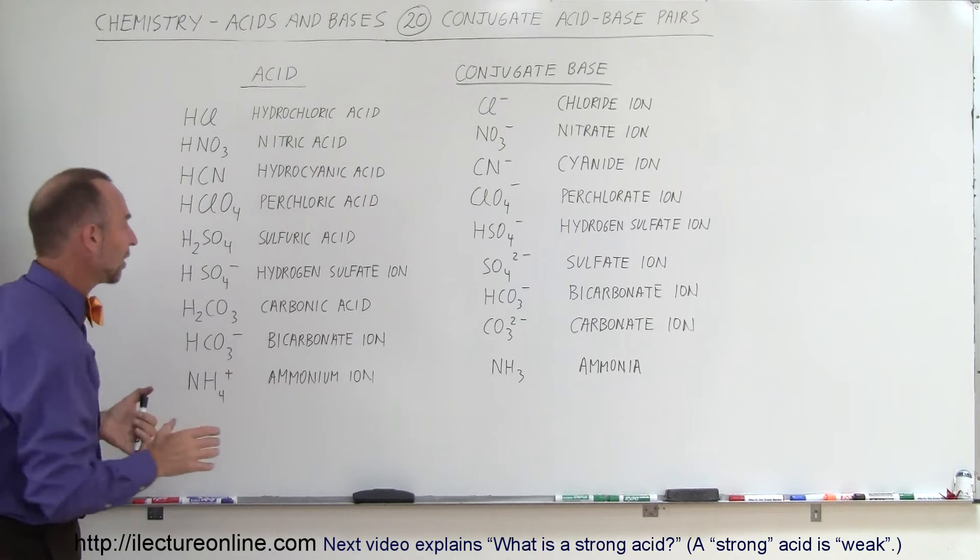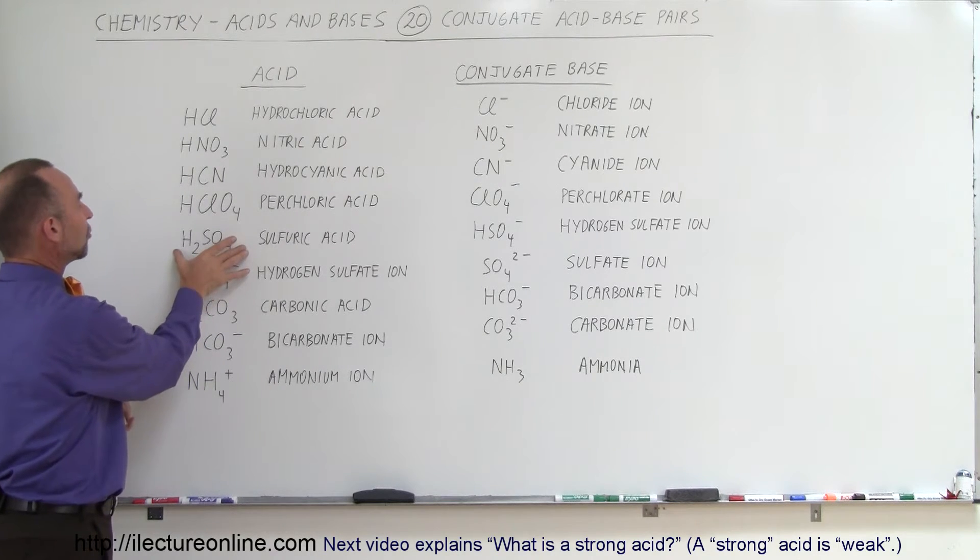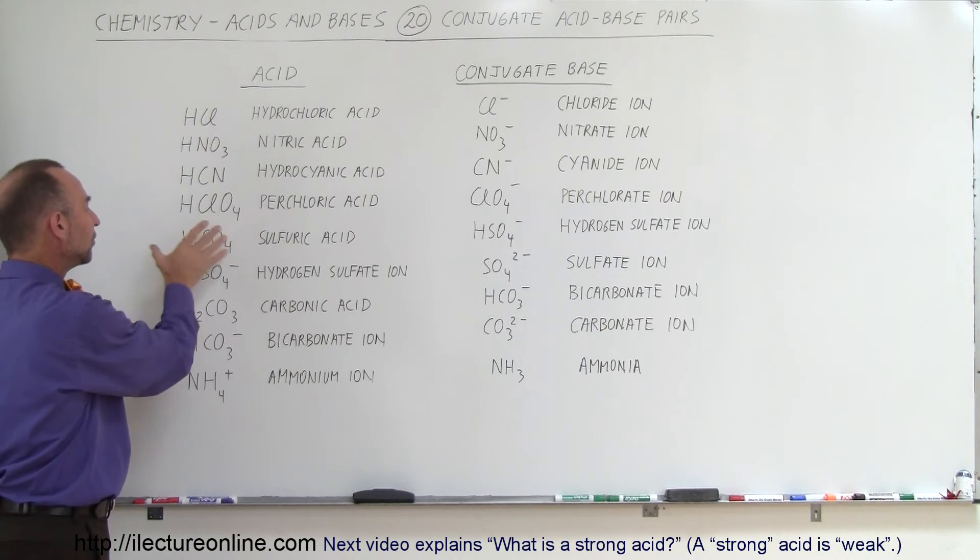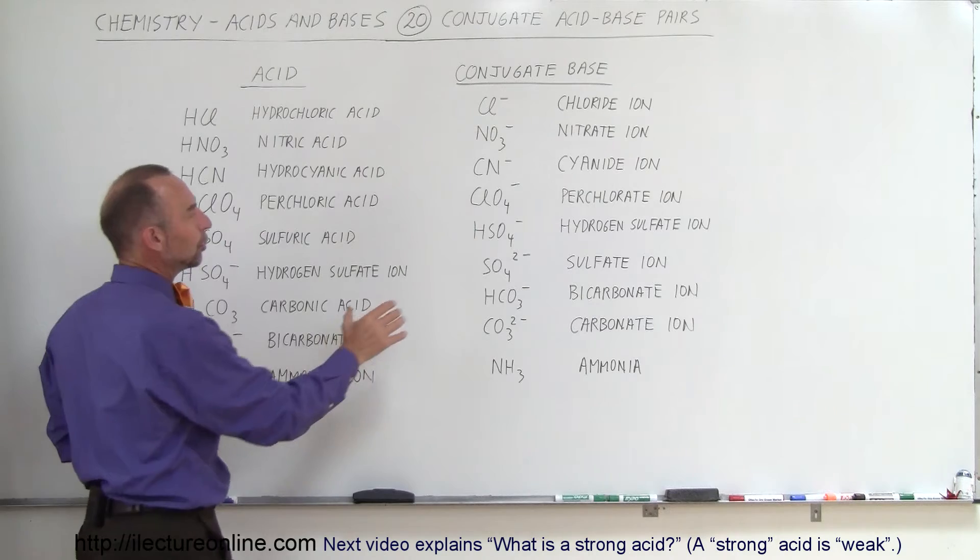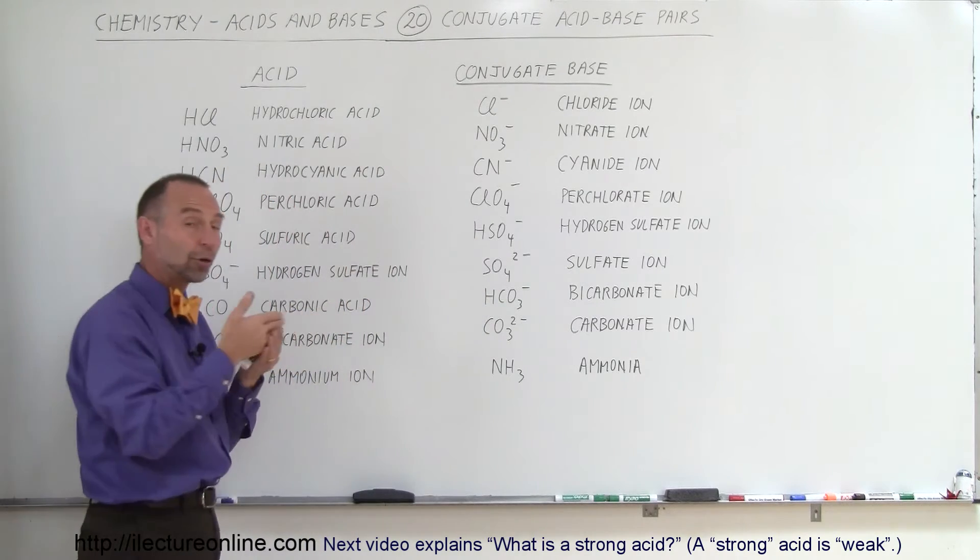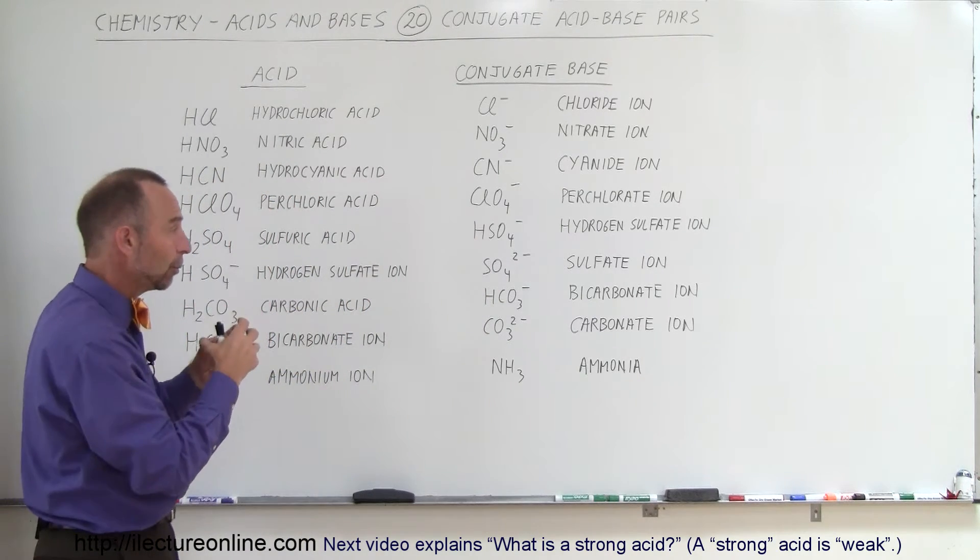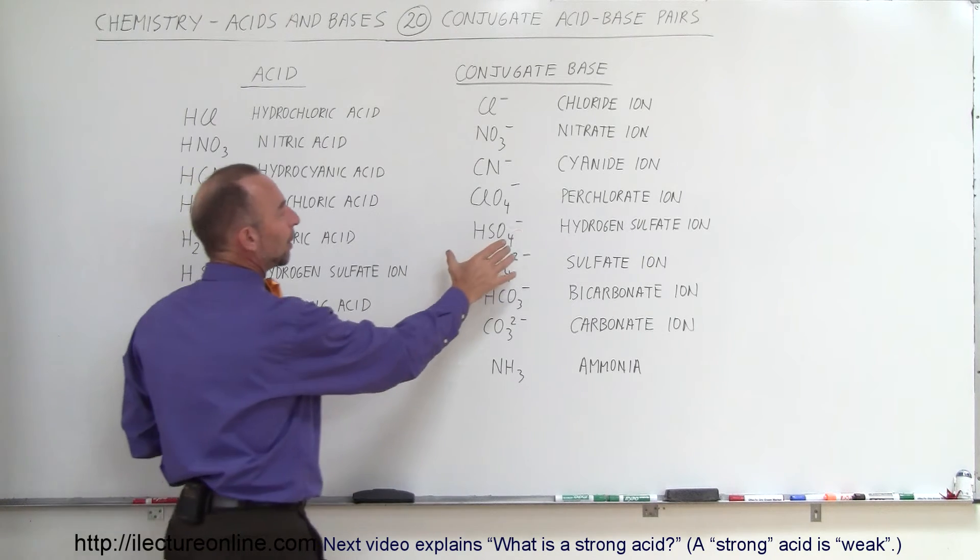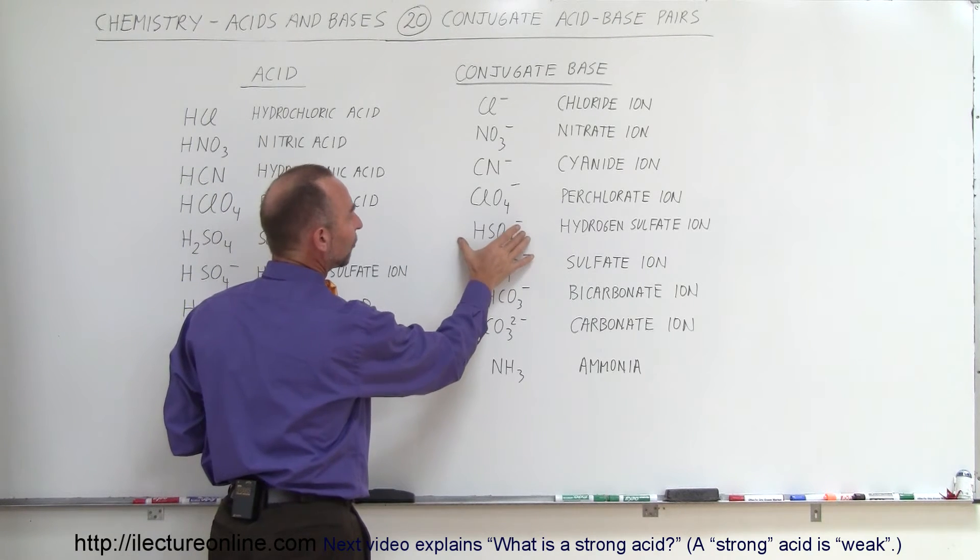And here we have an interesting example. Here we have sulfuric acid, H2SO4, and it will dissociate. One of the hydrogens will leave the molecule, and that hydrogen, of course, will form a hydronium ion with the combination of a water molecule. But the remainder, the hydrogen sulfate ion, is therefore what we call the conjugate base. Again, if given the opportunity, it will grab a hydrogen ion and turn itself back into sulfuric acid.